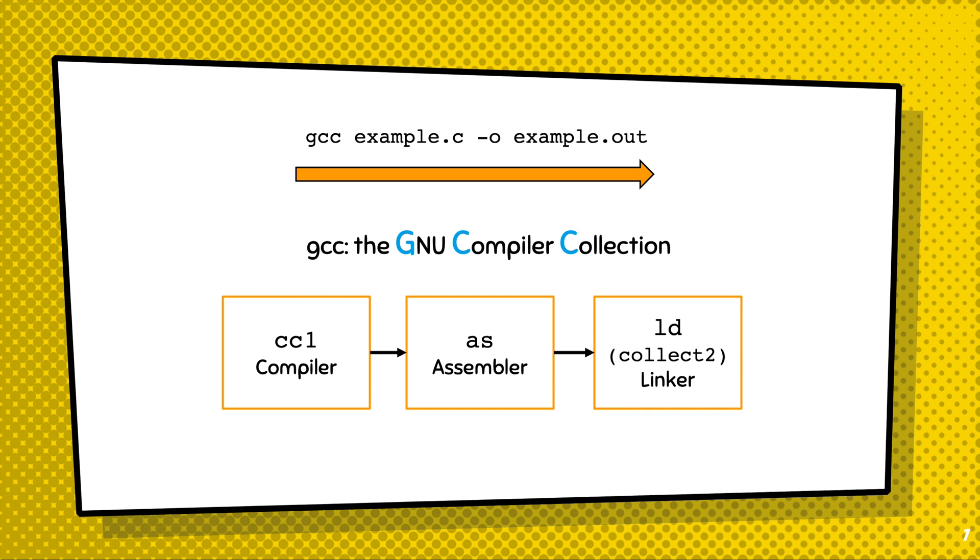Now we're going to look into the details of each step. In particular, we're going to run gcc example.c -o example.out --save-temps and -v. These two options enable us to generate temporary files and also intermediate commands.